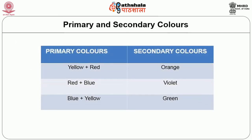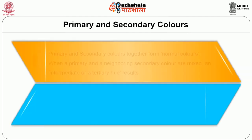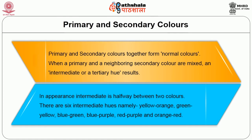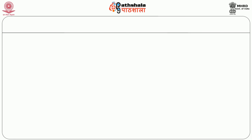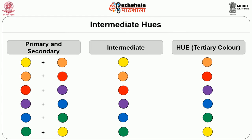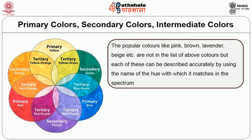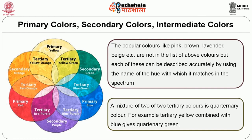Primary colors are: yellow plus red = orange; red plus blue = violet; blue plus yellow = green. Primary and secondary colors together form normal colors. When a primary and neighboring secondary color are mixed, an intermediate or tertiary hue results, which is halfway between the two colors. There are six intermediate hues: yellow-orange, green-yellow, blue-green, blue-purple, red-purple and orange-red. Some popular colors like pink, brown, lavender, beige etc. are not in the standard list but each can be described accurately using the name of the hue it matches in the spectrum. A mixture of two tertiary colors produces a quaternary color — for example, tertiary yellow combined with blue gives quaternary green.